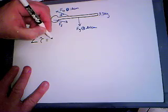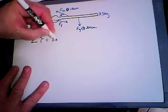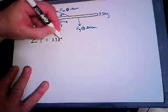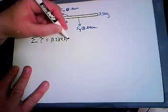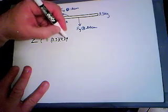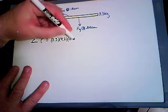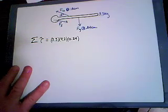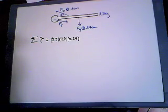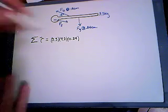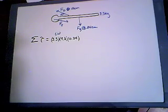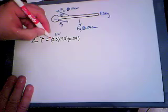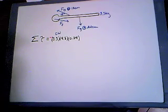So 3.3 times 9.8 times the distance from the axis of rotation, and that's 24 centimeters, so 0.24. Now this force is trying to create a clockwise torque. So because it's a clockwise torque, the convention is to treat this as a negative number. It's essentially based on the right-hand rule.